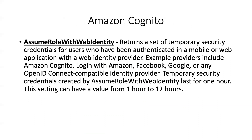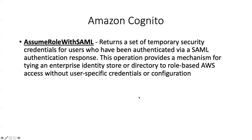When working with Active Directory, you use AssumeRoleWithSAML — it's a markup language. It returns a set of security credentials for users authenticated via a SAML authentication response, providing the mechanism for tying an existing enterprise identity store like Microsoft Active Directory to role-based access to AWS credentials. Therefore, you don't create IAM users or groups in AWS — all your groups and users are in Active Directory, and you create roles on AWS and specify which group gets which role-based access.